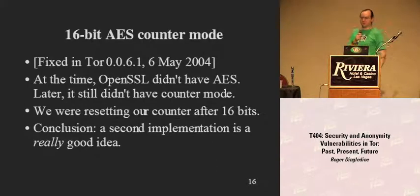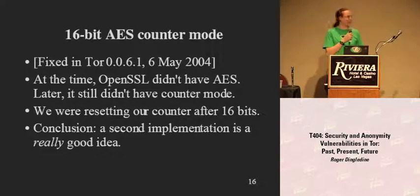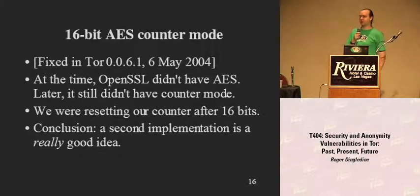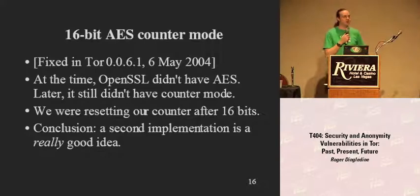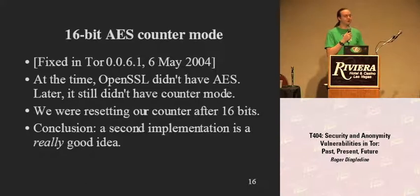I'm going to start from the distant past and work up to last week. Once upon a time, OpenSSL did not ship with AES, and even after it added AES, it didn't ship with counter-mode AES. So we added our own — we took the stock AES implementation and added counter-mode. It turns out one ampersand and two ampersands are very different when you're doing bitwise operations.